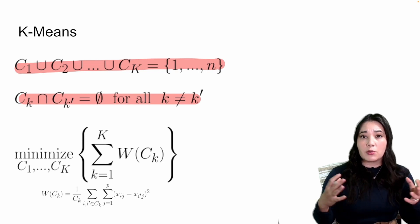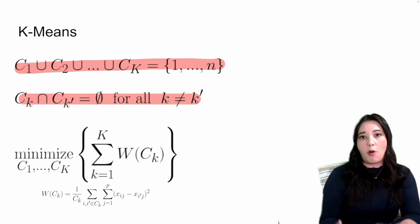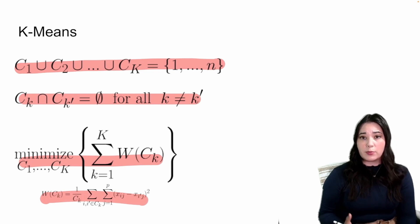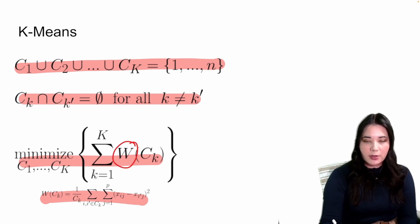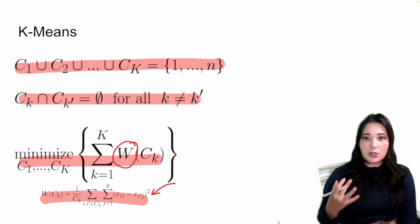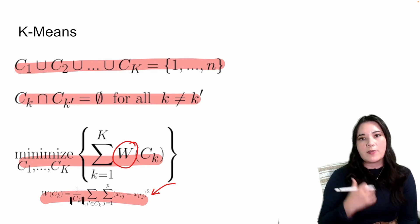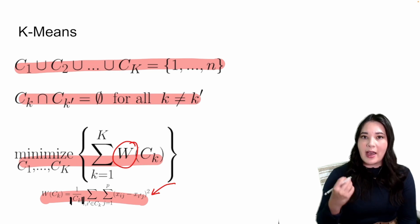If we're doing clustering for market segmentation, we want to make sure the groups of customers we create are very similar to each other. The math here says that when we create our groups, we choose them in a way that minimizes the within-cluster variance. This function W represents that within-cluster variance, calculated as the average squared distance of each data point to every other data point within that cluster, divided by the number of data points in that cluster.